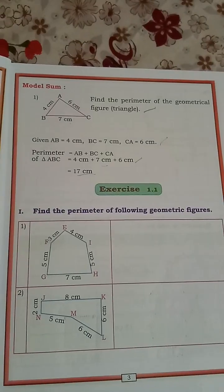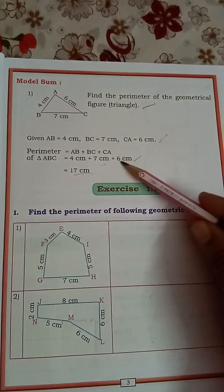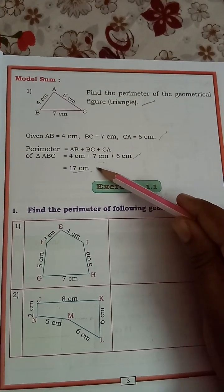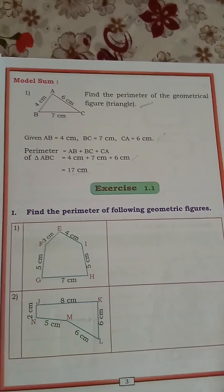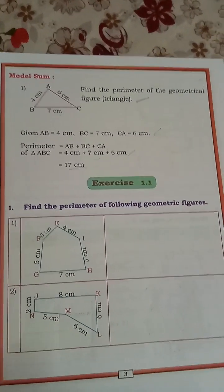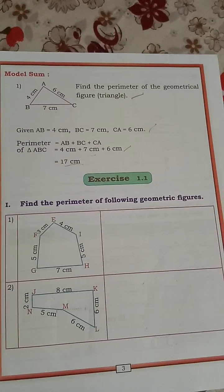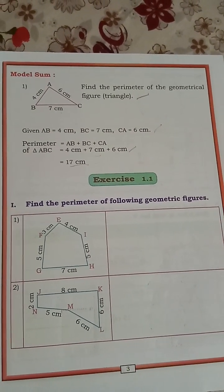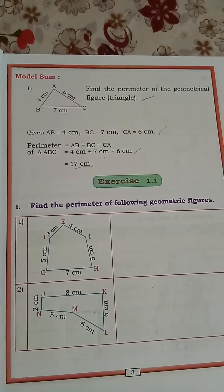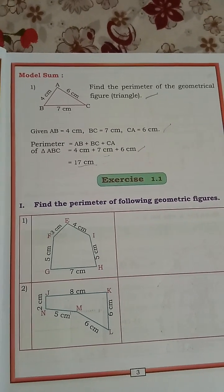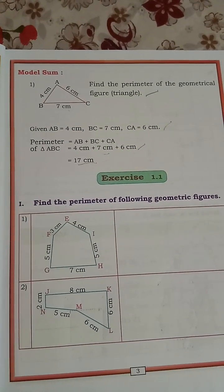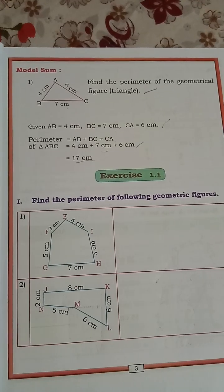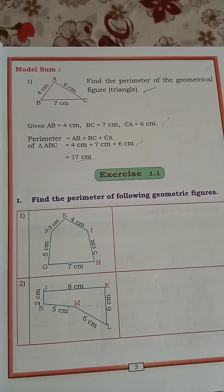The perimeter of the triangle is 17 cm. How was my class? Did you learn? Give your feedback to improve my channel. Thank you. We will see Exercise 1.1 in our next class.